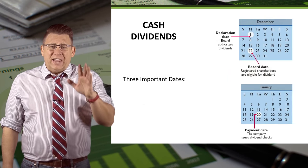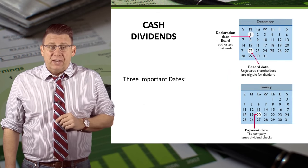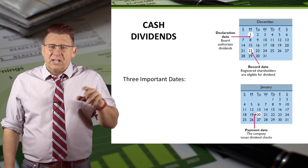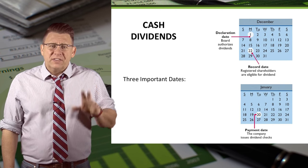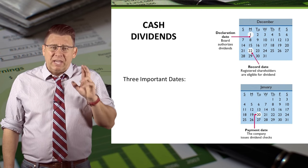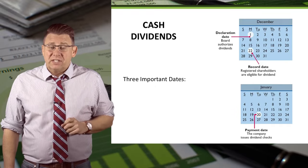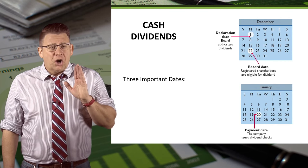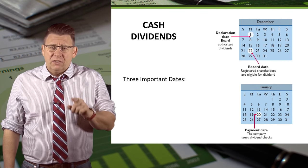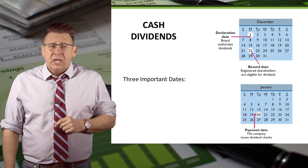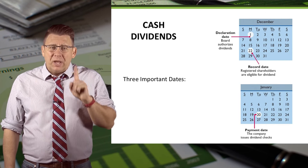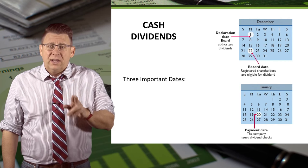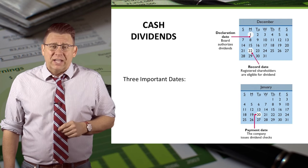There are three important dates when it comes to dividend payments. The first is the date of declaration. This is the day the company announces the dividend details. Dividends are not liabilities until this day — in fact, they are possible contingent liabilities until the date of declaration.